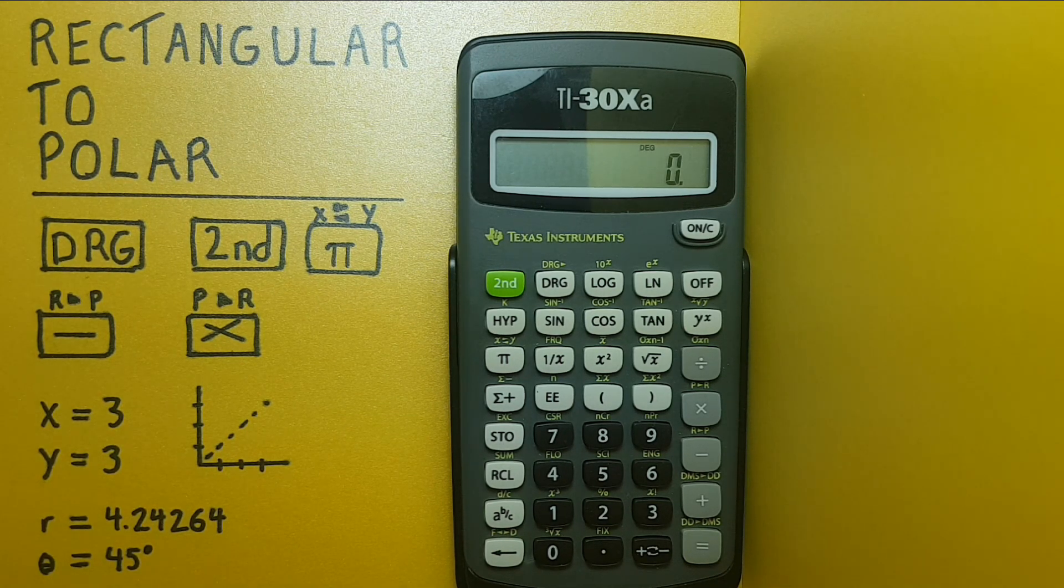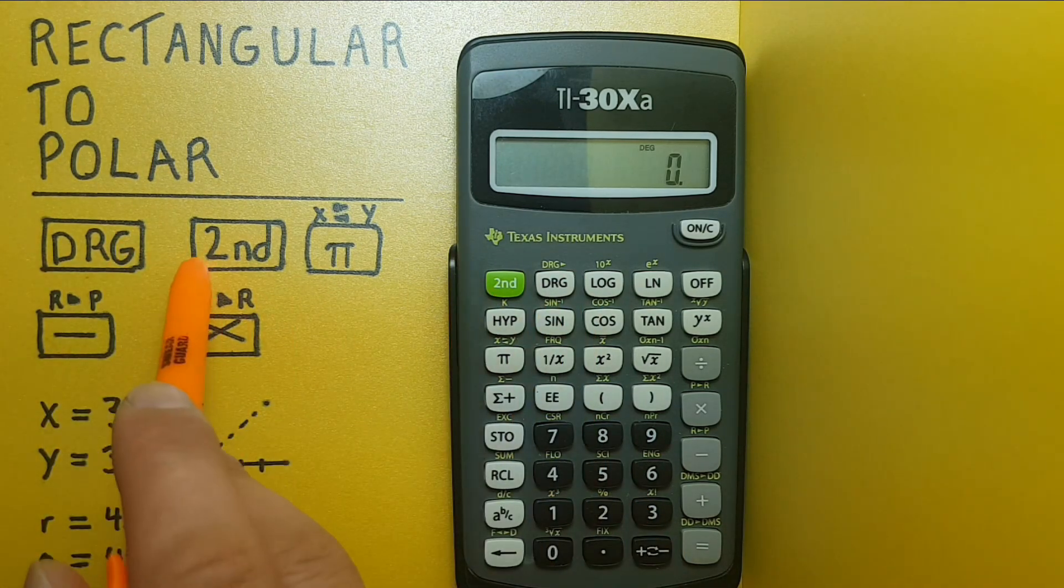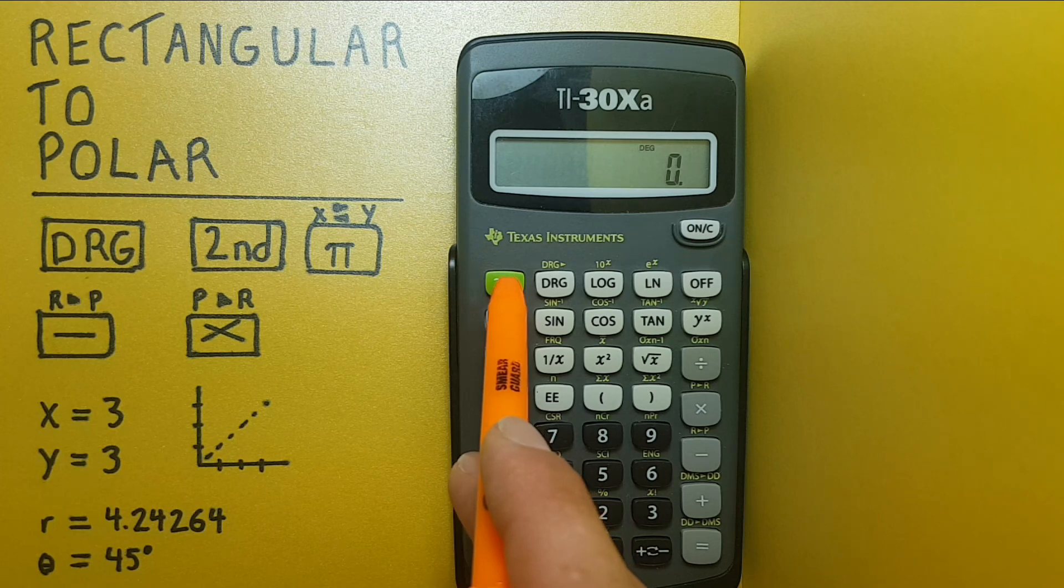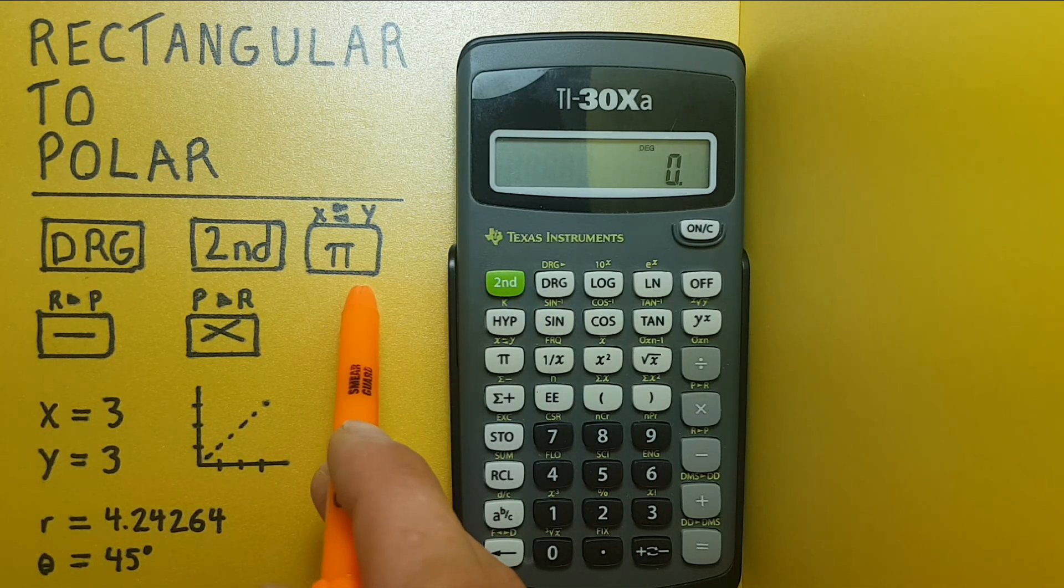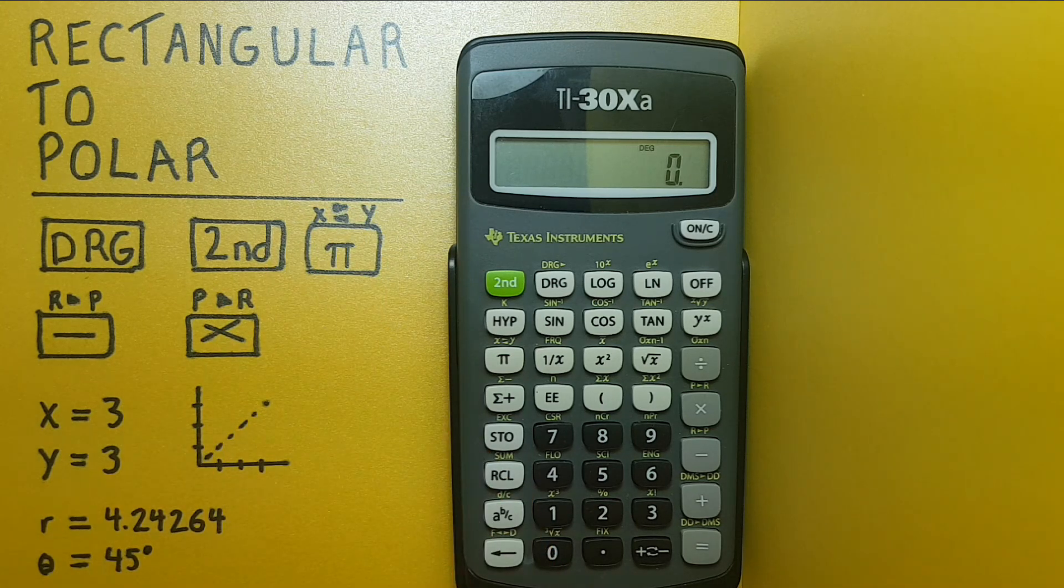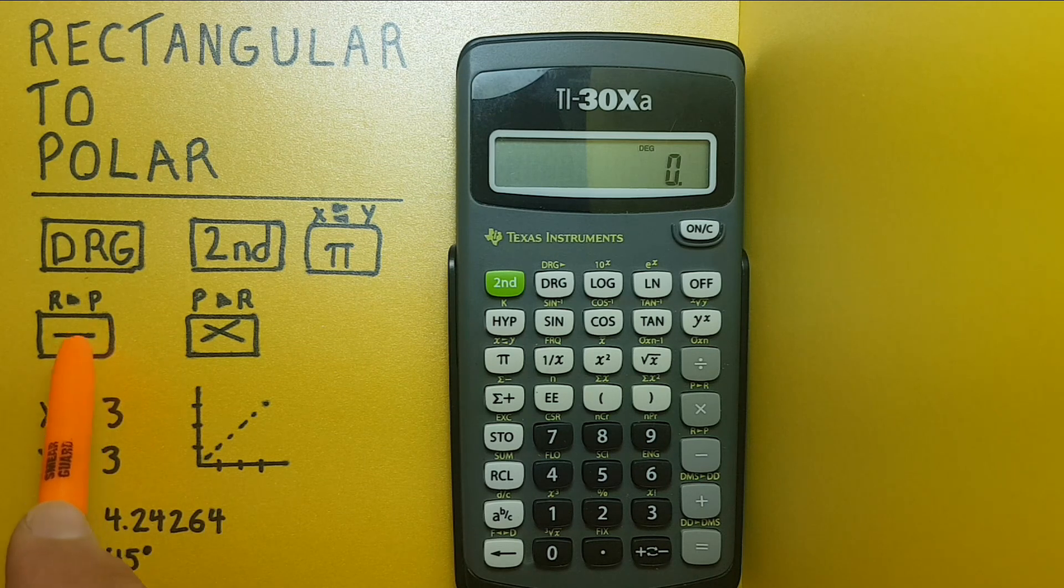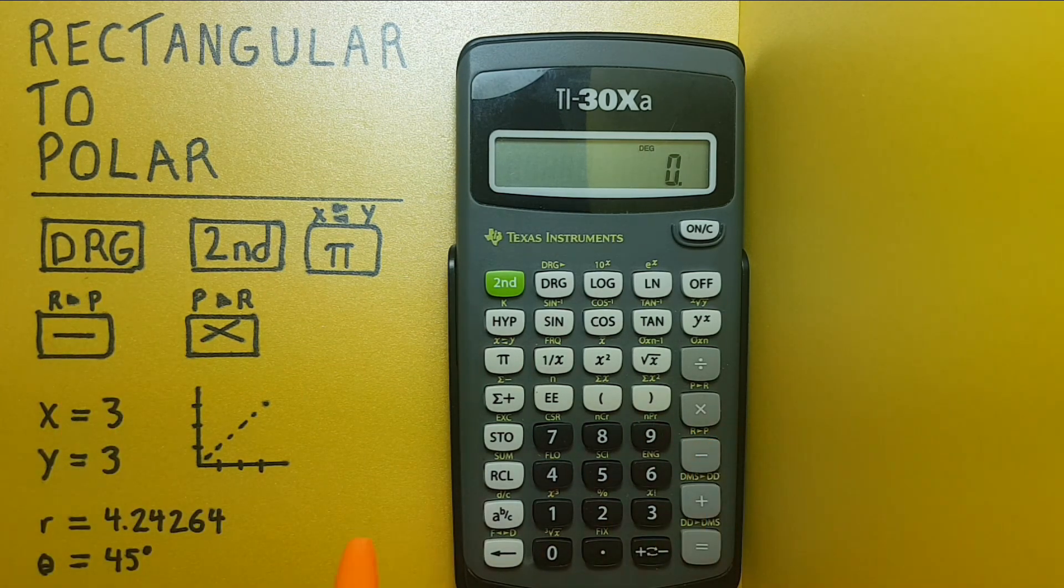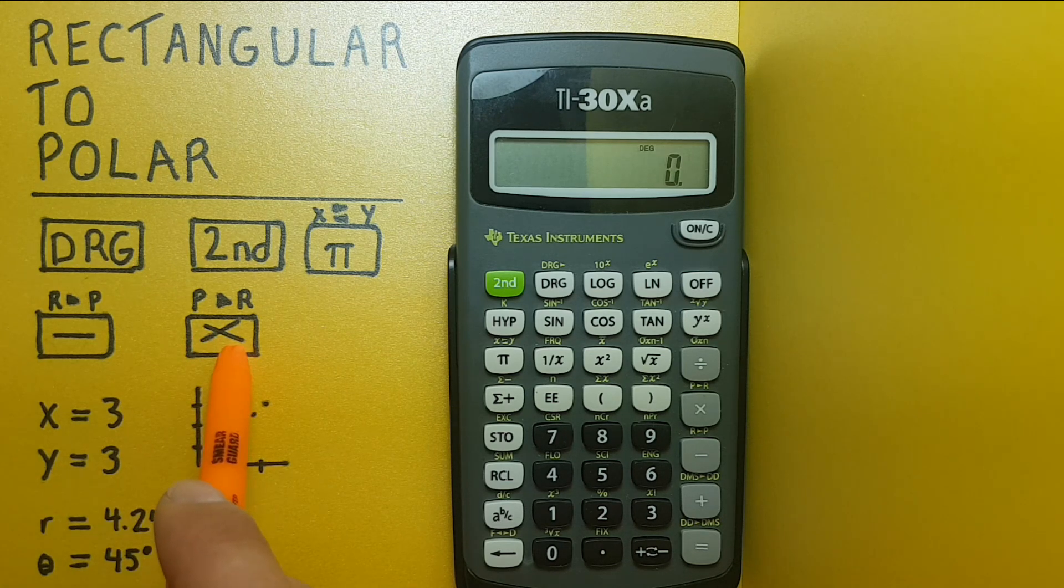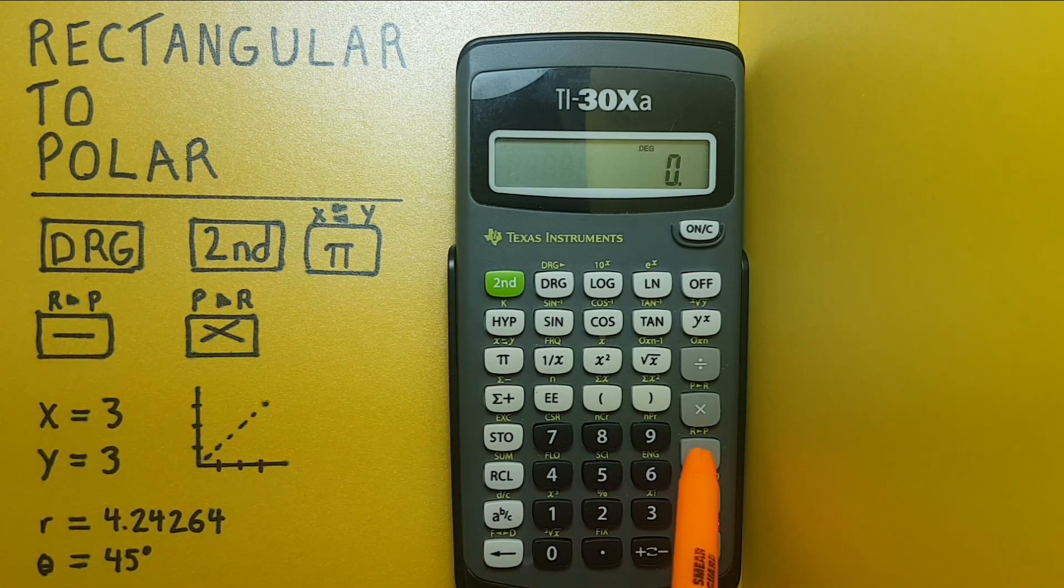To do this we're going to be using the DRG key located here, the second function key located here, the pi key with the second function x to y located here, the minus key with the second function of rectangular to polar located here, and the multiplication key with the second function of polar to rectangular here.